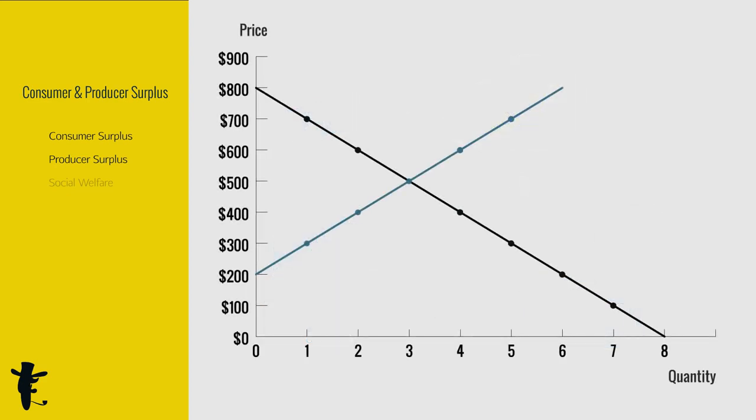On the supply curve, though everyone sells at an equilibrium price of $500, different producers have different willingness to sell. I hope to sell my computer for at least $300. Sold it at $500. My producer's surplus is $200.